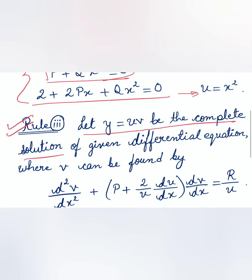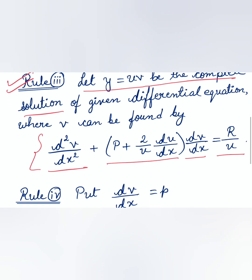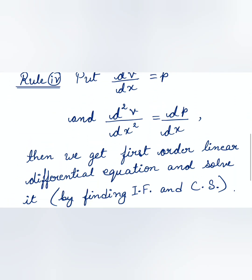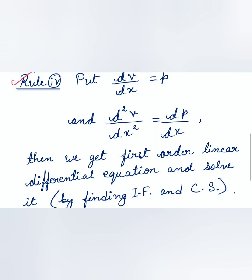In Rule 3, we assume y = uv to be the complete solution of the given differential equation, where v is found by the formula: d²v/dx² + [p + (2/u)(du/dx)] · dv/dx = r/u. We find v by this formula and then proceed to rule 4.